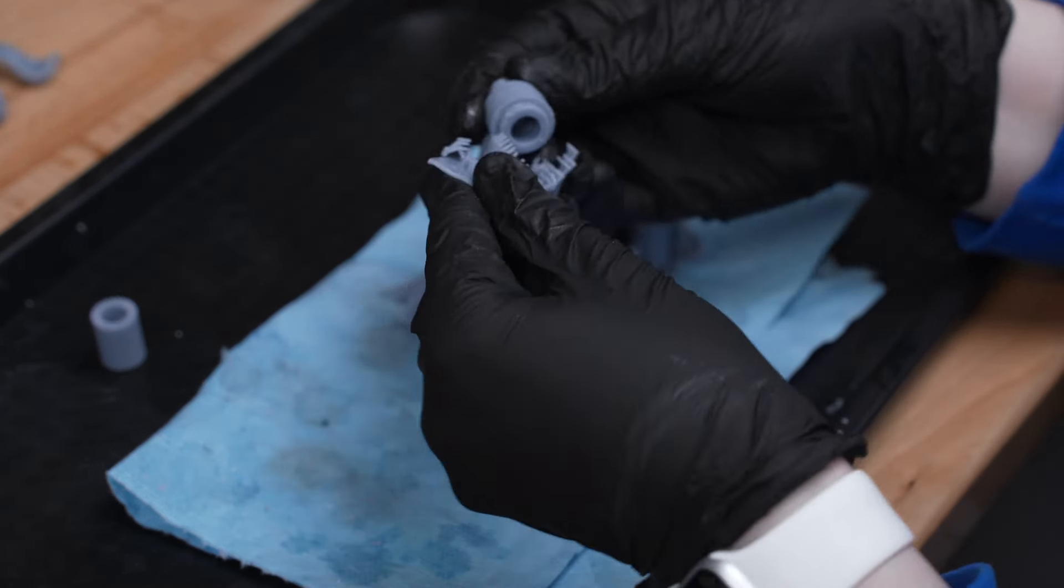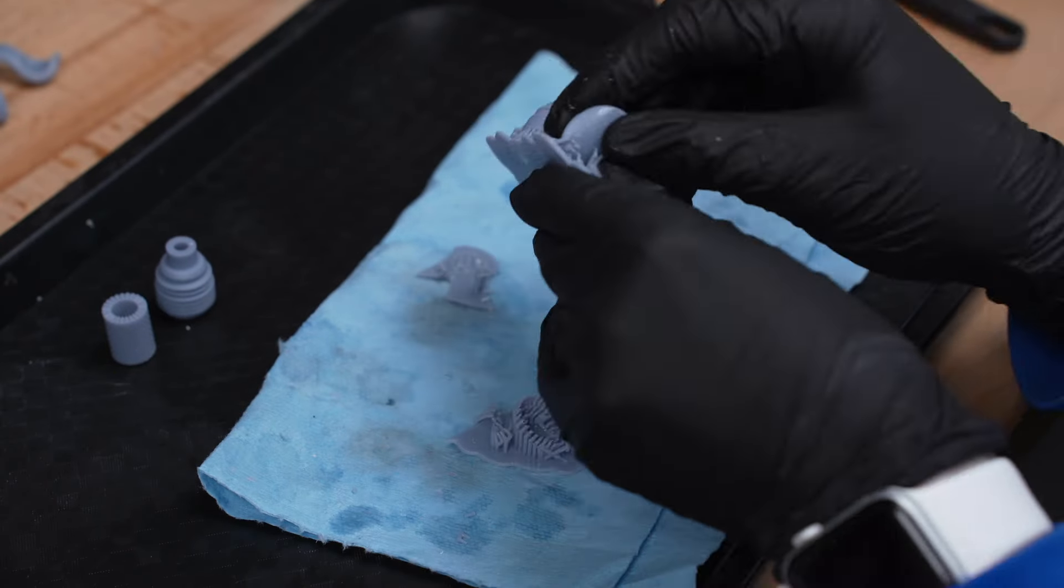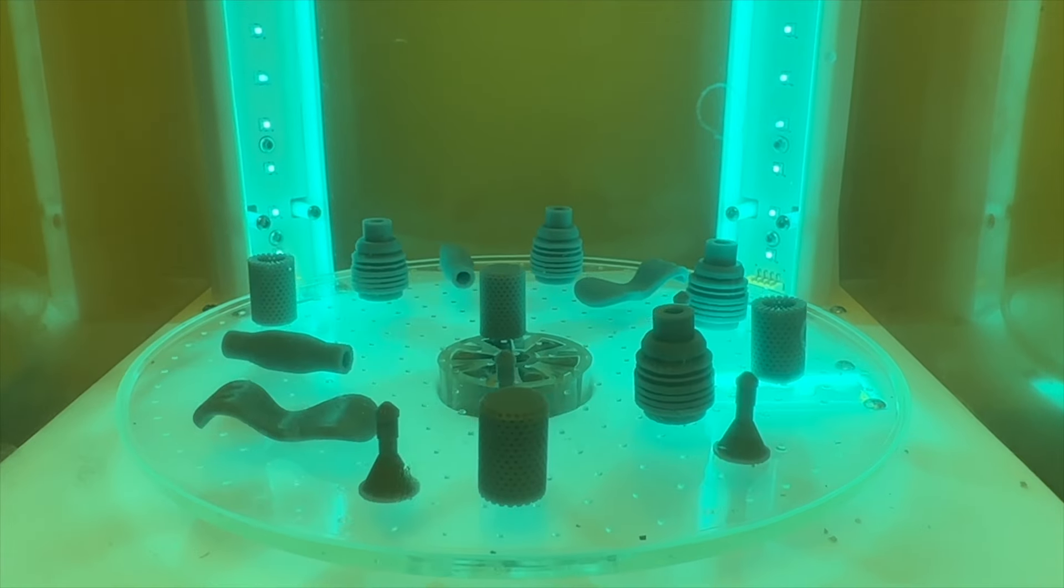Since these pieces are all resin, I of course cleaned them with alcohol before using my heat gun pen to help with support removal, and then finally cured all of the pieces.